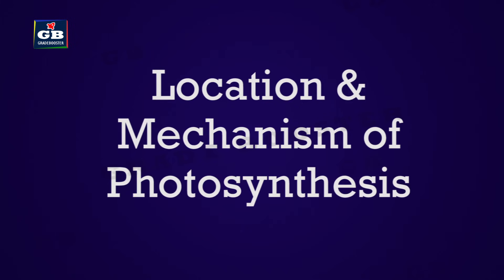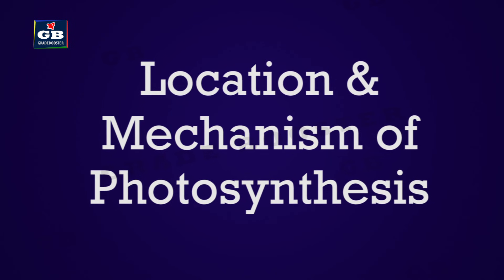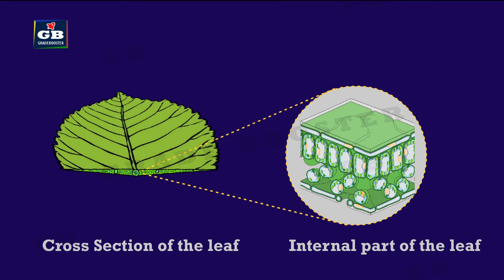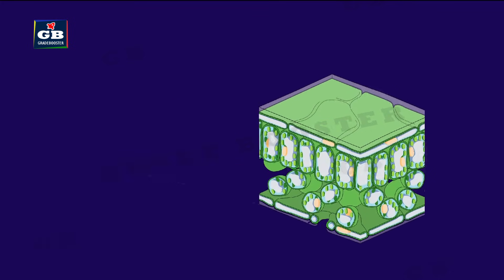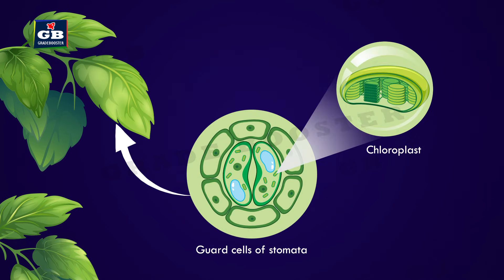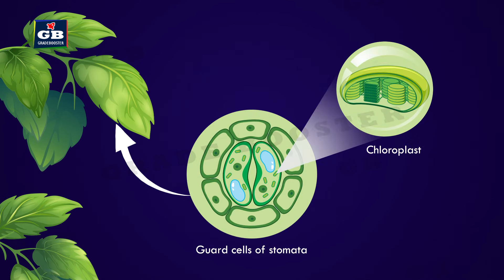Now let us know about the location and mechanism of photosynthesis. We all know that the leaf is the site of photosynthesis, but exactly where does it take place inside the leaf? Looking at the cross section of the leaf, these are the parenchyma cells, which have many green-colored bodies called chloroplasts. Chloroplasts are also present in large numbers in the guard cells of stomata. The chloroplast is the exact place where photosynthesis takes place.